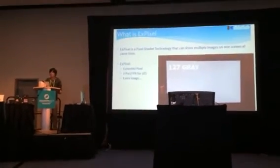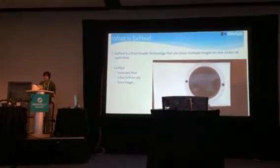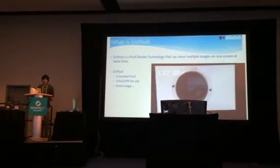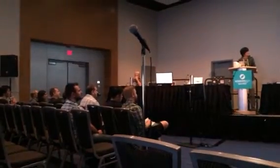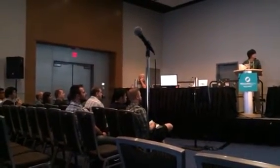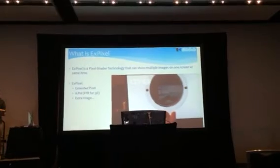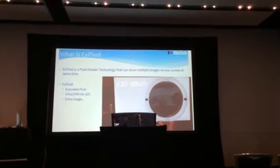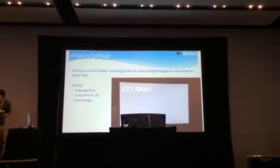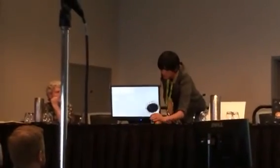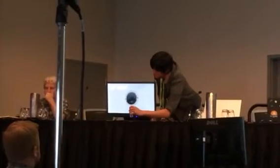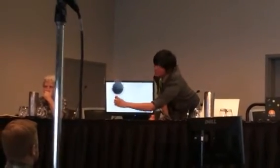XPixel is a pixel-shader technology that can show multiple images on one screen at the same time. XPixel's name comes from the X20D pixel system — the X-Core system is a frame-cutter retarder for 3D, and extra image also. Here, you don't see an image, but with the polarization filter, you can see the image.